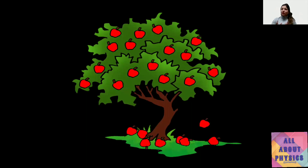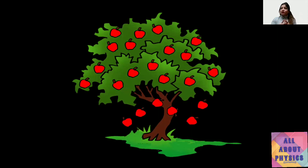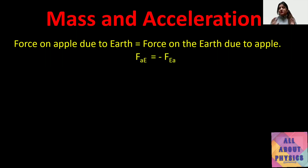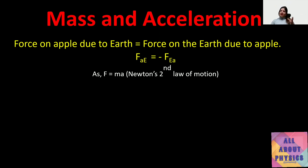When we talk about force, we consider mass and acceleration of the object. We know that F = ma from the previous chapter. In the Earth-apple system, the force on the apple due to Earth is the same magnitude as the force on Earth due to the apple, but opposite in direction — this is why we consider a negative sign. These two forces are equal in magnitude but opposite in direction.